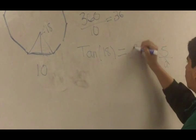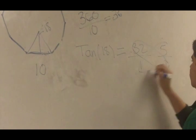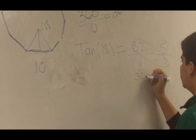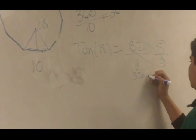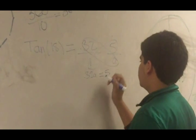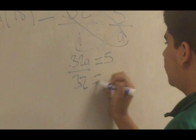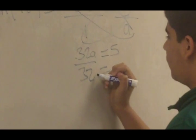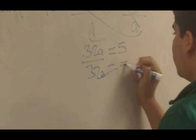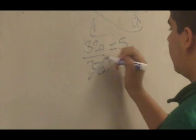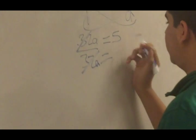I cross multiply and it gives me 0.32a equals 5. I want to get a by itself, so I divide 5 by 0.32.